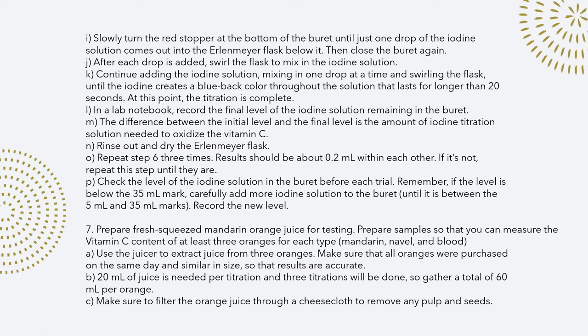After completing the trials for the vitamin C standard solution, I moved on to the mandarin juice for testing. I started by juicing the oranges and then filtering it so that there was no pulp — it was pure juice. I needed 20 milliliters of juice per titration, so it was imperative that I got 60 milliliters per orange to perform all of my trials. I bought three different oranges of each variety at the store, roughly about the same size and weight so that all my results were consistent.